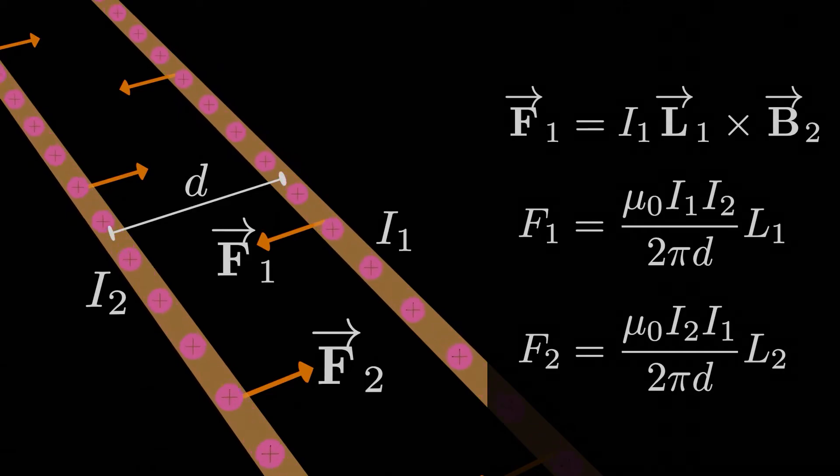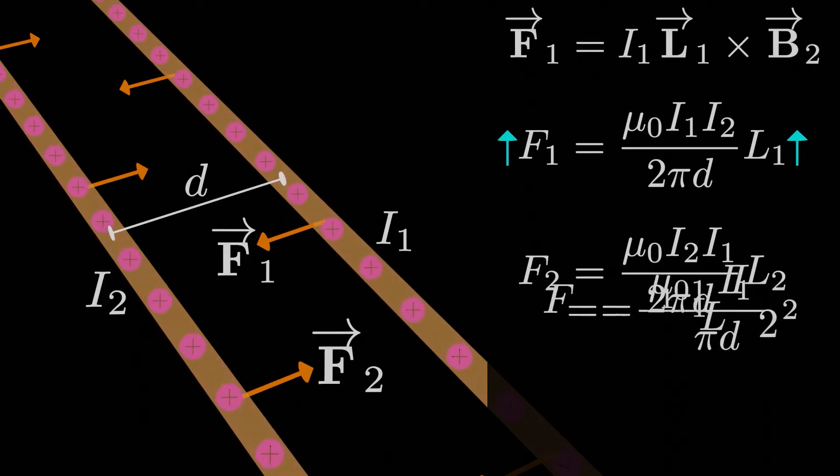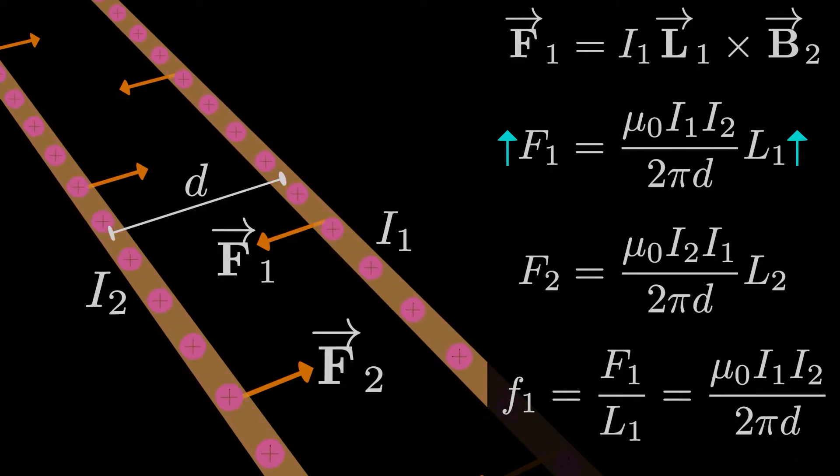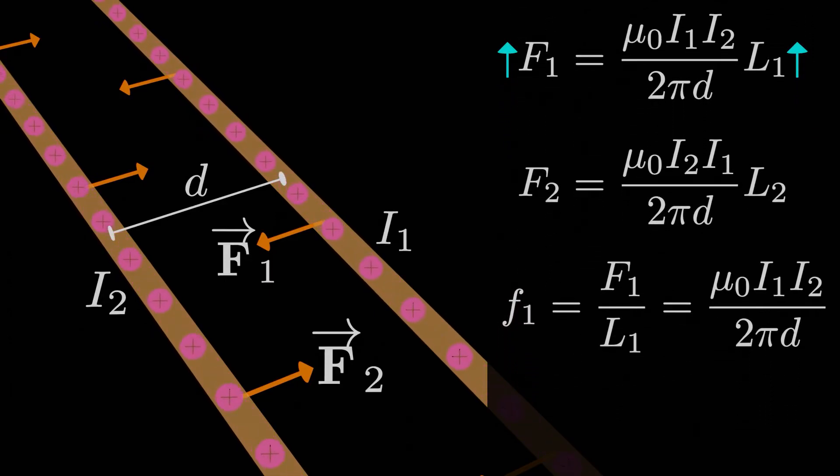Now I should stress one thing. Both wires have to be not only straight, but long in order for mu-naught I over 2 pi D to be a reasonable approximation we can use for the magnetic field due to each wire. If each wire is really long, or L is really large, that means F might be really large as well. So it often makes sense to divide out L on both sides, and we call lowercase f the magnetic force per unit length on each wire. It's the total magnetic force that acts on the wire per meter of the wire. So we don't have to worry about the long length of the wire taking over all the other variables, in which case we can see that the force per unit length on each wire would actually be the same.